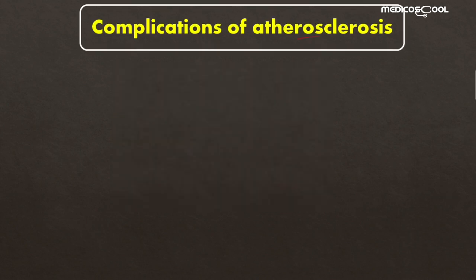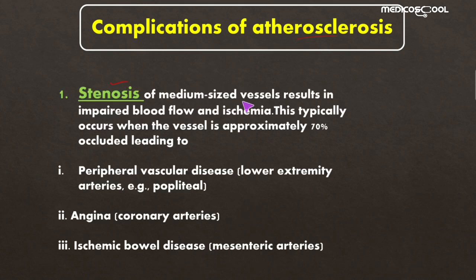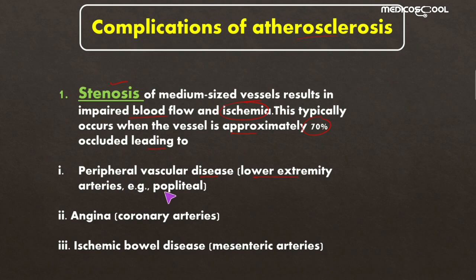Complications of atherosclerosis: The first is stenosis of medium-sized vessels, resulting in impaired blood flow and ischemia of the supplied organ. This typically occurs when the vessel is approximately 70% occluded and can lead to peripheral vascular disease, for example of the lower extremities involving the popliteal artery, angina when coronary arteries are involved, and ischemic bowel disease when mesenteric arteries are involved.